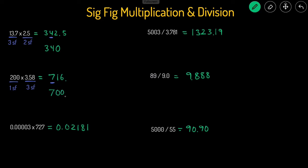We're just going to add the two zeros until we get to the imaginary decimal point that is supposed to be there, because 700 is way closer to 716 than seven is.